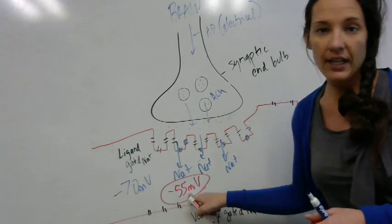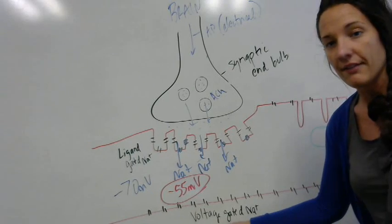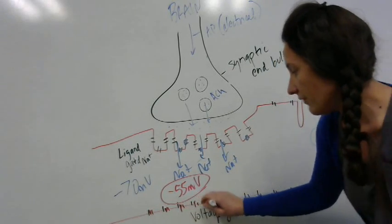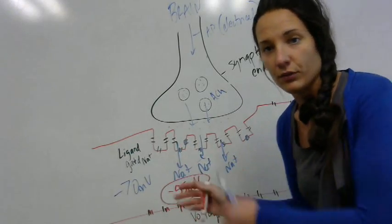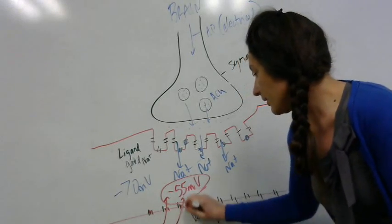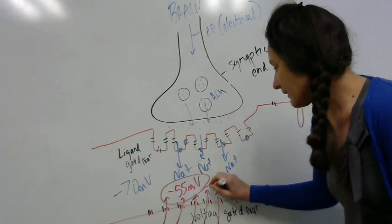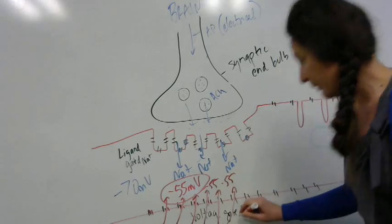That special voltage allows for the voltage-gated channels, which are along the outside of the membrane, to be activated. Because I've reached a special voltage, these voltage-gated channels begin to open, and they also bring in more sodium. Every time I activate one, they bring in more sodium and activate the next one.